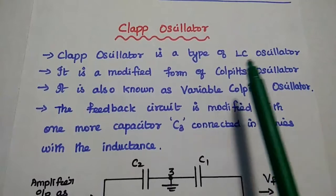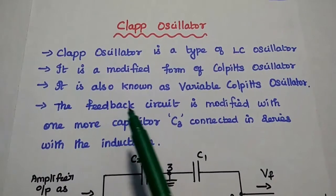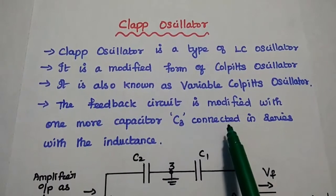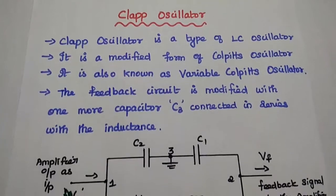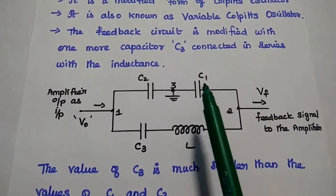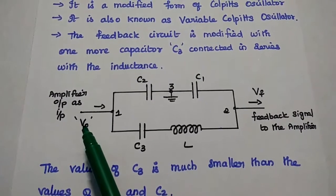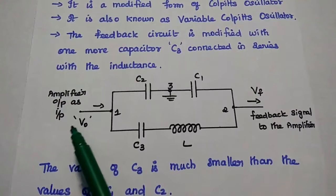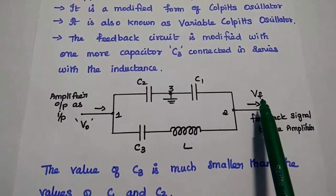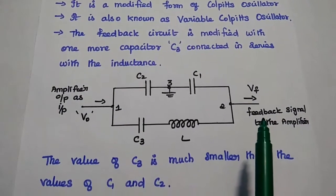We have already discussed the Colpitts oscillator in the previous lecture. In the CLAP oscillator, the feedback circuit is modified with one more capacitor C3 which is connected in series with the inductance. The feedback network has three capacitors C1, C2, and C3, and one inductor L. VO is the output of the amplifier circuit, given as input here, and the output is VF. The feedback signal VF is given as input to the amplifier to produce oscillations.